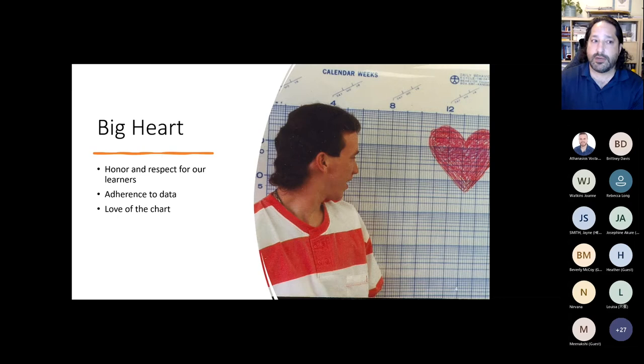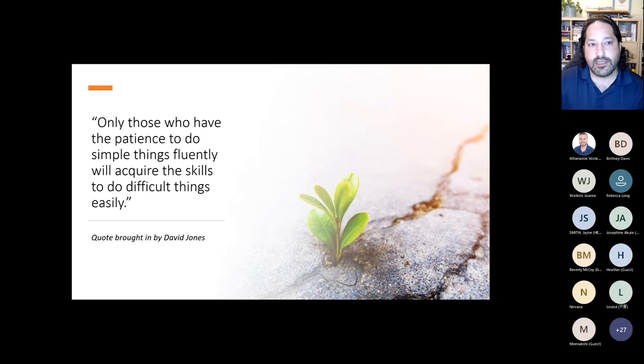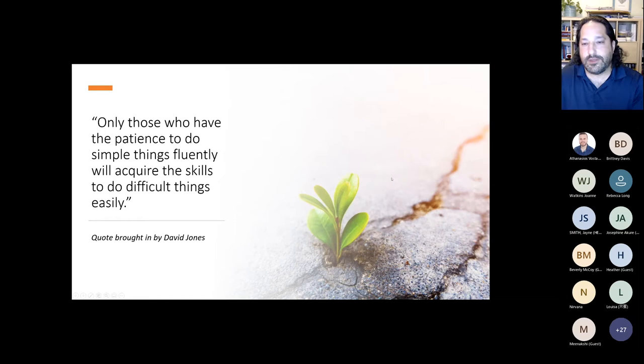I want to make a big note about having a big heart. It is ultra important when we start looking at motor: we want to honor and respect our learners, adhere to data, and ultimately have a love of the chart. One quote that really speaks to precision teaching is: 'Only those who have the patience to do simple things fluently will acquire the skills to do difficult things easily.' We'll be looking at fluency, and although you can do many motor skills without the chart, the chart will magnify and make these things special.